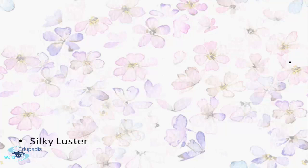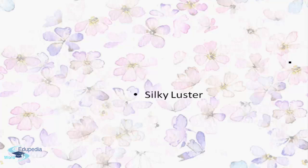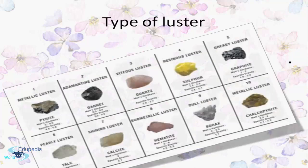Finally, silky luster refers to elements that shine when light falls on them and are generally very thin or opaque. To summarize the examples for each luster type: metallic luster — pyrites and chalcopyrite; adamantine — garnet; vitreous — quartz and calcite; resinous — sulphur; greasy — graphite; pearly — talc; sub-metallic — hematite; dull luster — borax.